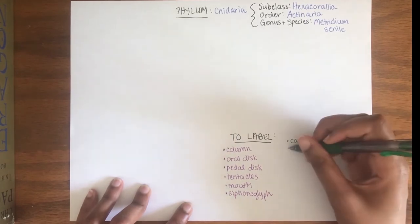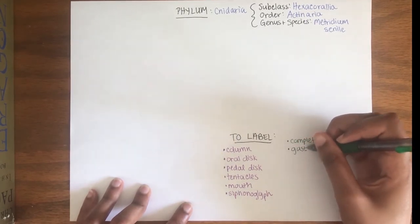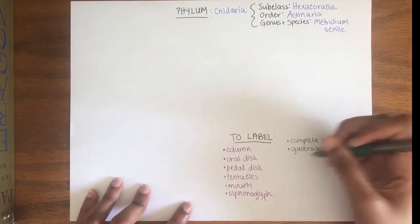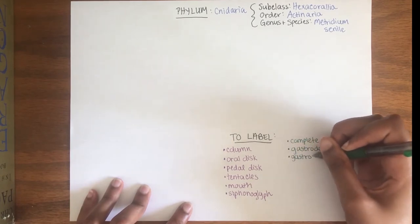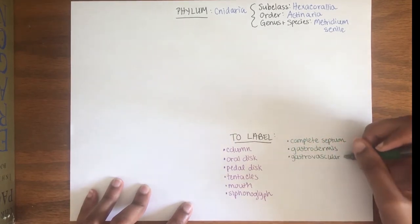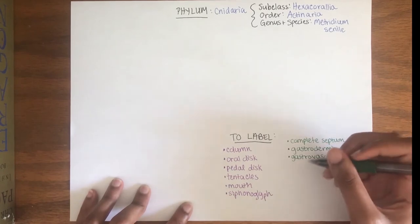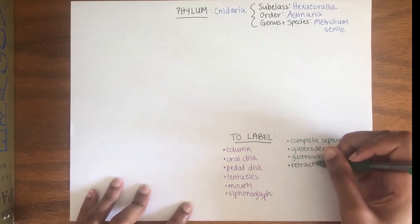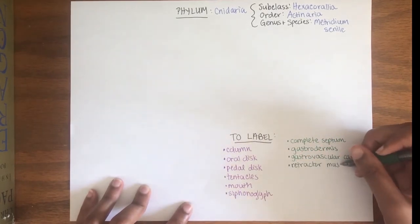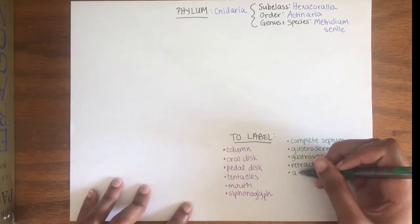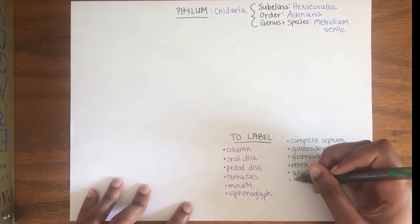septum which provides body structure and increased surface area for digestion, the gastrodermis and gastrovascular cavity, the retractor muscle which enables movement, acontia which are nematosis filled threads that can exit the anemone for defense through pores called synclides,